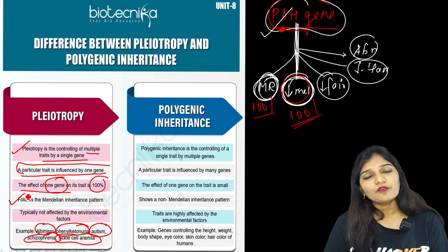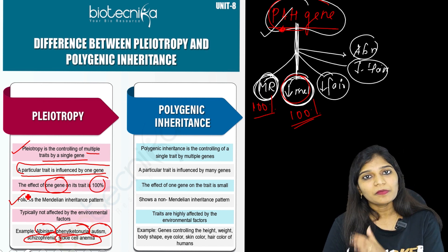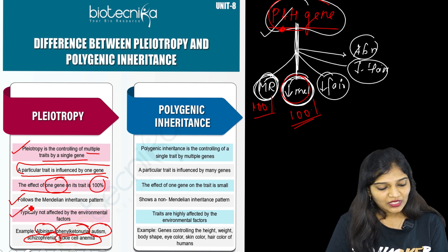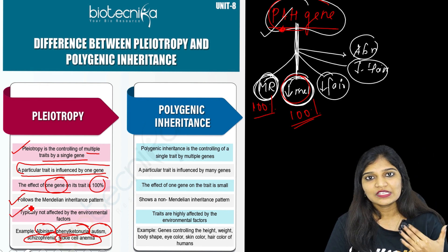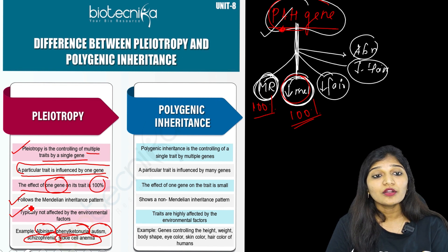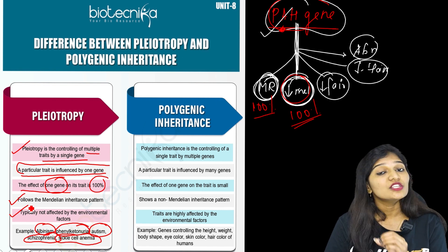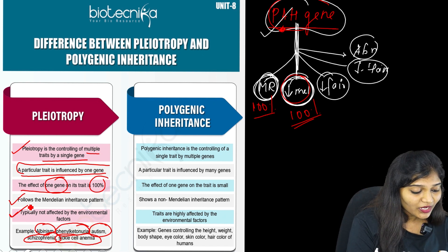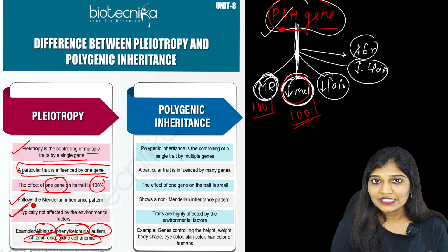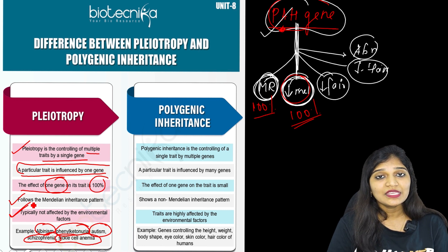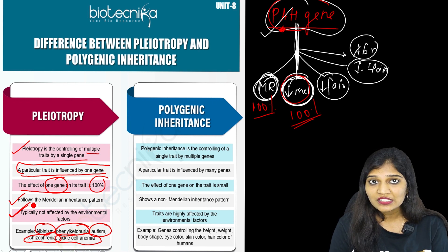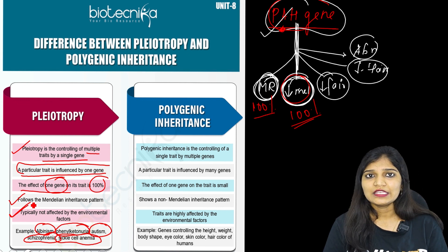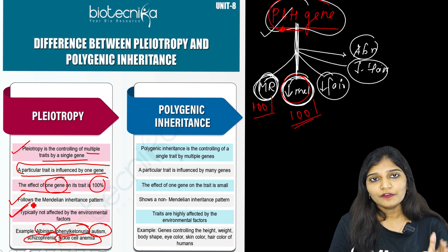Pleiotropy usually follows Mendelian inheritance pattern. Also, phenylketonuria, autism, albinism, and schizophrenia — pleiotropy is not affected by any environmental factors. The example summary: one gene controlling many characters or traits — autism, phenylketonuria, schizophrenia, albinism, and sickle cell anemia. This is all about pleiotropy.